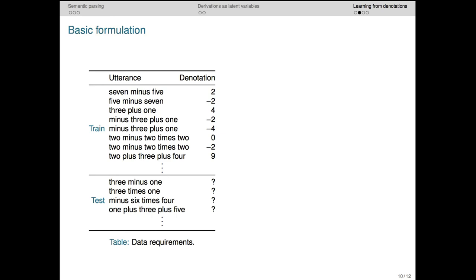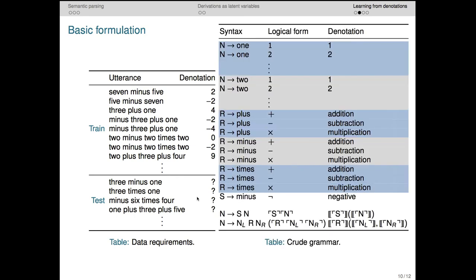This slide begins to convey how much harder this problem is intuitively. Our training pairs are now utterances or syntactic structures paired only with their final denotations. The prediction task is then to map new utterances to their correct denotations directly.